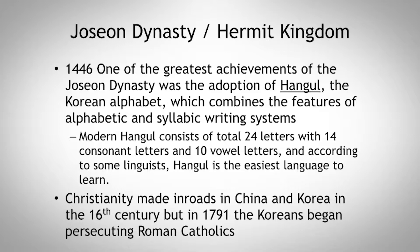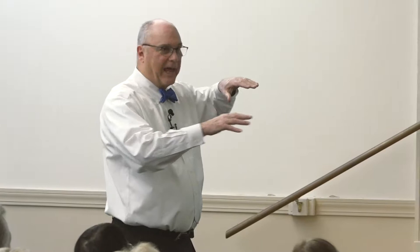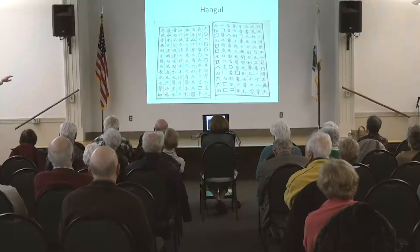Christianity made inroads in China and Korea in the 16th century, but in 1791, the Koreans began persecuting Roman Catholics — specifically Jesuits — who were really trying to push Christianity on the people. Originally, the Korean language was written right to left, top to bottom. Now it's adopted the Western way: left to right.